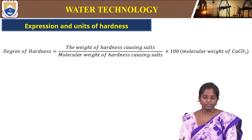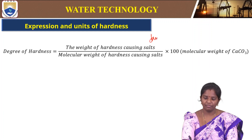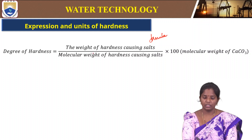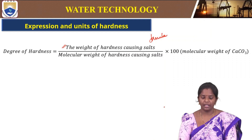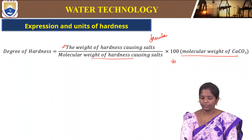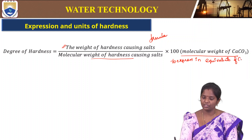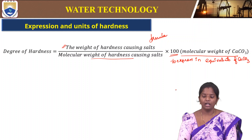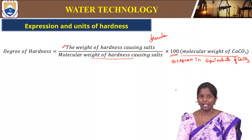What are the expressions and units? This is the formula we will be using for calculating the hardness of any water sample. It is the weight of the hardness-causing salt divided by the molecular weight of the hardness-causing salt, multiplied by 100, which is the molecular weight of calcium carbonate, to express in equivalence of calcium carbonate. We are generally expressing hardness in equivalence of calcium carbonate, therefore multiplying by 100.